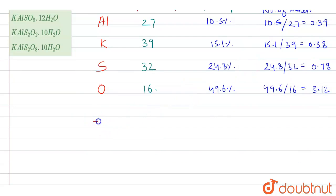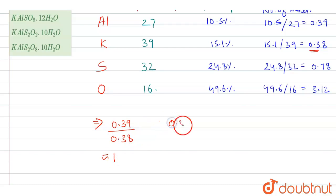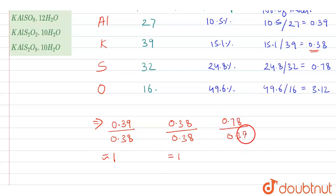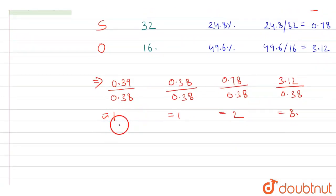To convert to simple whole numbers, we divide all values by the smallest number, which is 0.38. So 0.39 ÷ 0.38 ≈ 1, 0.38 ÷ 0.38 = 1, 0.78 ÷ 0.38 ≈ 2, and 3.12 ÷ 0.38 ≈ 8.